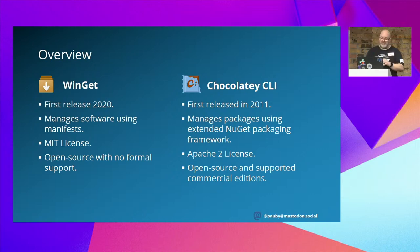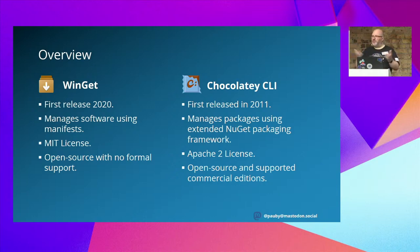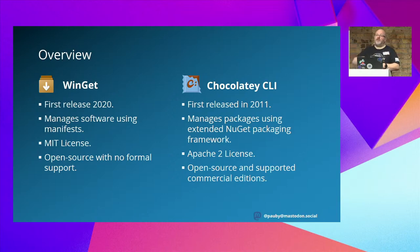So just a brief overview. Winget manages software using manifests in a YAML format. Some people say it's not a package manager — I'm not going to get into that debate. It's released under an MIT license, which is great for some organizations — very permissive. It's open source, but there is no formal support for it at all. Chocolatey CLI manages packages using the extended NuGet packaging framework. NuGet is a package manager on Windows used under things like Visual Studio to download dependencies and libraries for development projects. Chocolatey took that, extended it, and added scripting support that makes Chocolatey CLI as powerful as it is. It's released under an Apache 2 license — again, fairly permissive — it's open source, and there are supported commercial editions and tooling around it as well.